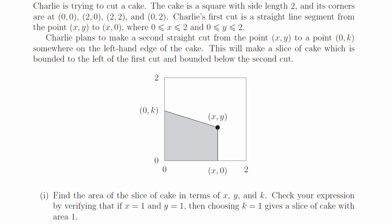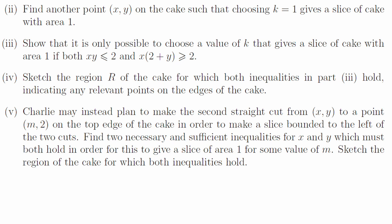Question 4, part 1. That's a rectangle plus a triangle, and the area works out to be x times k plus y, all over 2. Part 2. You could instead take x to be 4 thirds and y to be 1 half. Anything with x times y plus 1 equals 2 works, if you're inside the cake.